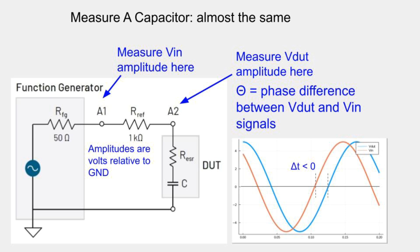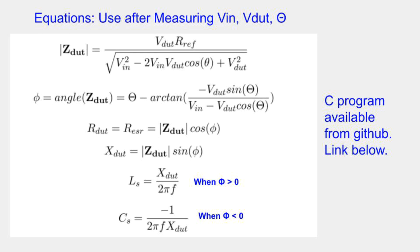The measurements for a capacitor are basically the same. The difference is that the time difference between VDUT and VIN will be negative in the case of a capacitor. After measuring the amplitudes of VIN and VDUT and also the phase difference theta, we have to do math to compute the results. The equations look pretty complicated, but I've written a C program available from GitHub to do the computations. Basically, you compute the magnitude and angle of the complex impedance Z, then from that compute R-ESR and the reactance of the DUT, and finally either an inductance or capacitance depending on whether the angle is greater than or less than zero.